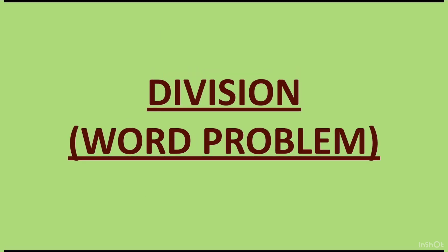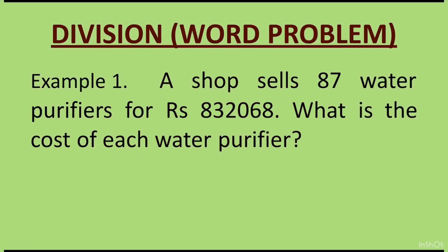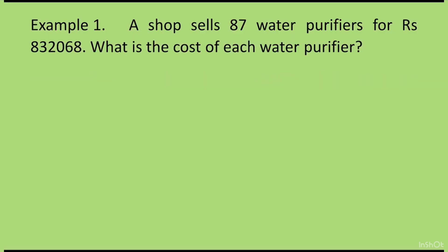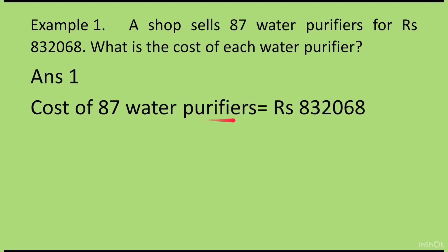In this video we will do word problems. Let us take the first example. A shop sells 87 water purifiers for Rs. 832068. They have given us the cost of 87 water purifiers is Rs. 832068. So we will write the first sentence as: cost of 87 water purifiers is equal to Rs. 832068.